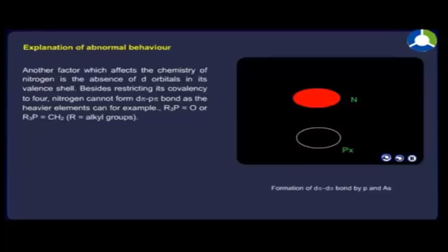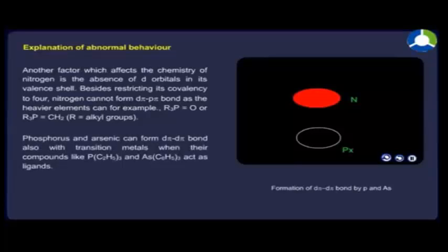Phosphorus and arsenic can form dπ-dπ bonds also with transition metals when their compounds like P(C₂H₅)₃ and As(C₆H₅)₃ act as ligands.